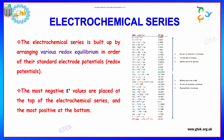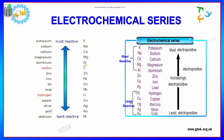The electrochemical series is built based on the arrangement of standard reduction potential values. The power of reduction increases going down the series, while oxidizability increases and metals become more noble going up. The most negative charge values are placed at the top and the most positive at the bottom. Metals at the top are most reactive and electropositive, while metals at the bottom are least reactive and least electropositive.